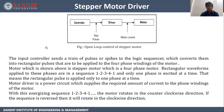The input controller sends a train of pulses or spikes to the logic sequencer, which converts them into rectangular pulses to be applied to the 4-phase windings of the motor. The motor shown is a stepper motor, which is a 4-phase motor. Rectangular waveforms applied to these phases are in sequence 1, 2, 3, 4, 1, and one phase is excited at a time — meaning the rectangular pulse is applied only to one phase at a time. Motor driver is a power circuit that supplies the required amount of current to the phase windings. With energizing sequence 1, 2, 3, 4, 1, the motor rotates in counter-clockwise direction. If the sequence is reversed, it will rotate in the clockwise direction.